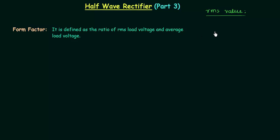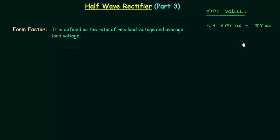The RMS value is the equivalent of DC value. For example, a lamp connected to a 5V RMS supply will shine with the same brightness when it is connected to the 5V DC supply. If we connect a lamp to the 5V RMS AC supply, it will shine with the same brightness as if we connect it to the 5V DC supply.